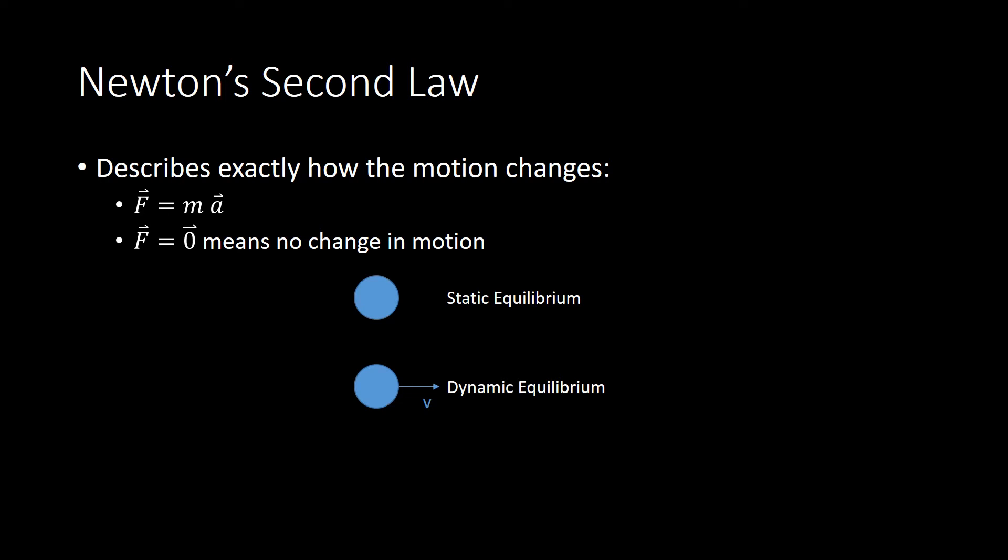So we still have our two cases of equilibria. F equals zero applies to both and whether it's static or dynamic just depends on that initial velocity whether there was any or there wasn't.